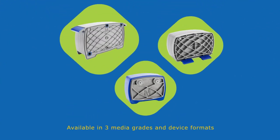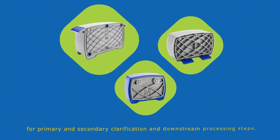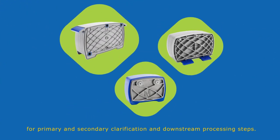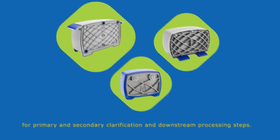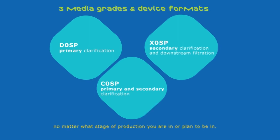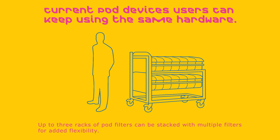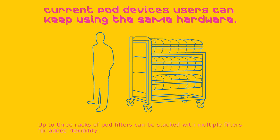Available in three media grades and device formats for primary and secondary clarification and downstream processing steps, they are scalable to fit your needs no matter what stage of production you are in or plan to be in. Up to three racks of pod filters can be stacked with multiple filters for added flexibility.